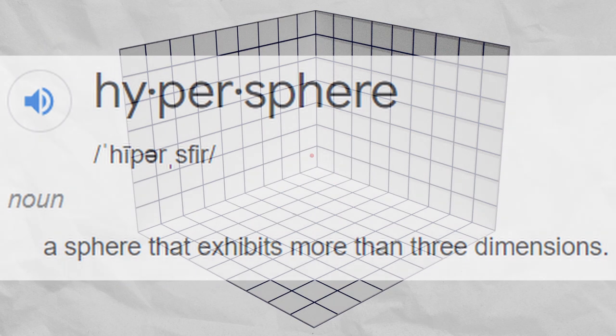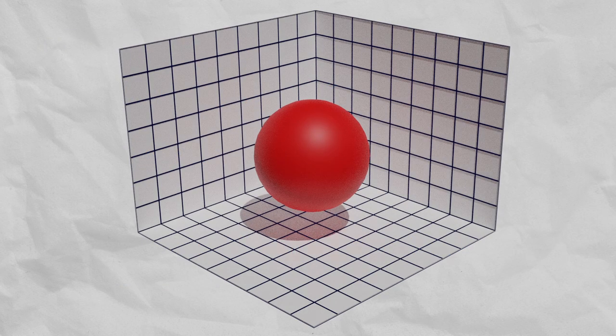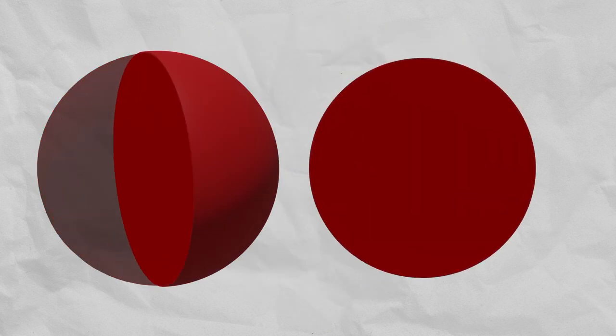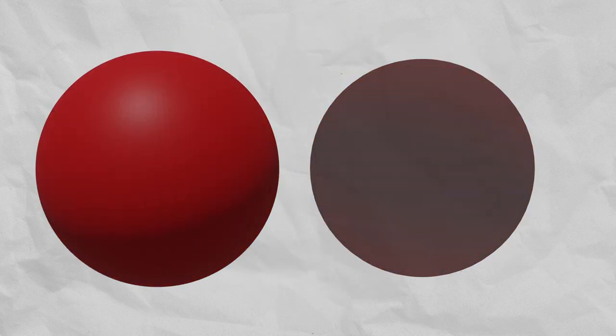This is a hypersphere, the 4D version of a sphere. As it moves through the fourth dimension, it appears to grow and shrink, just like how a 2D slice of a 3D sphere makes a circle that grows and shrinks.